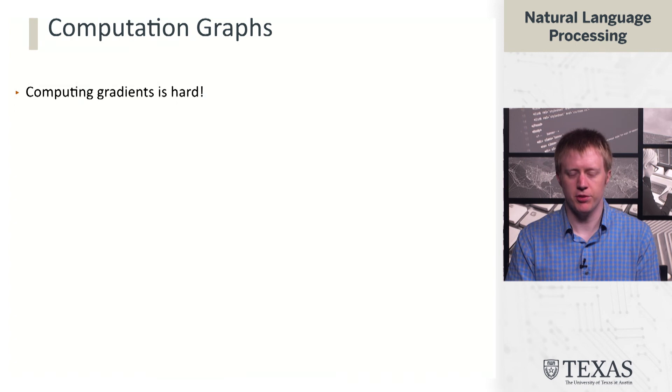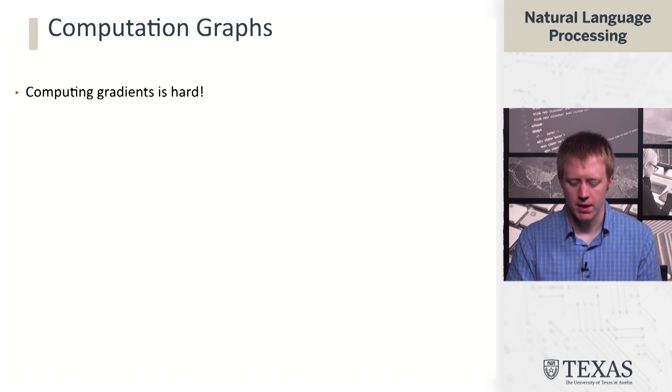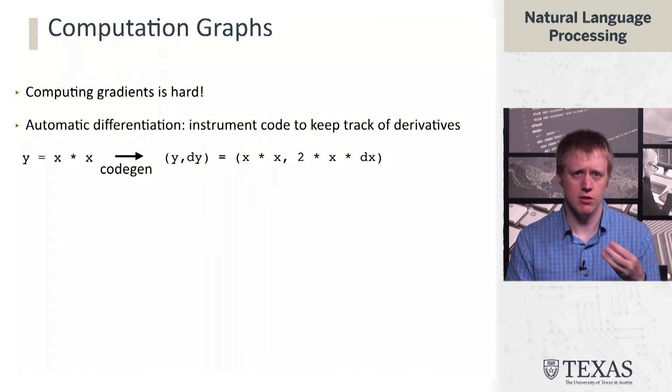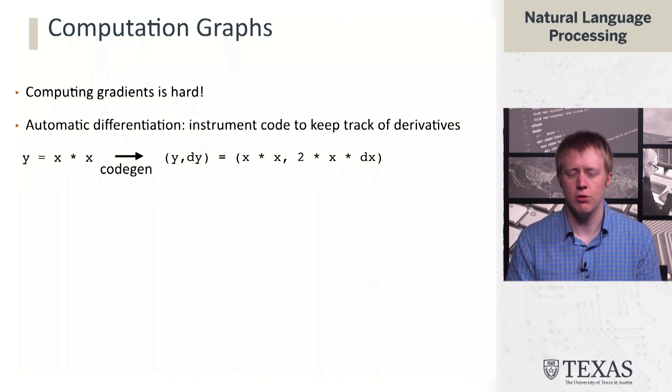to be able to offload that work onto something like a compiler. The core idea is that if we have a bunch of mathematical operations written in code, we can theoretically use automatic differentiation to understand what's going on in that code and keep track of the derivatives.